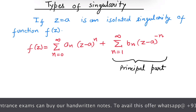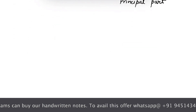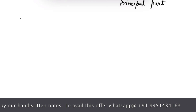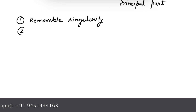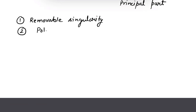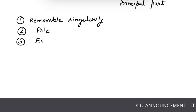There are three types of singularity. First, removable singularity. Second, pole. And third, essential singularity.